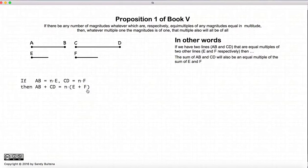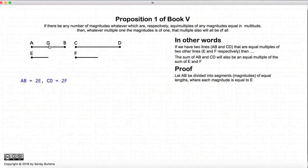So let's prove this. So we're starting with an example only where AB is equal to two times E and CD is equal to two times F. And we create a point G such that AG is E and GB is E. And we create a point H so that CH and HD are also equal to F.